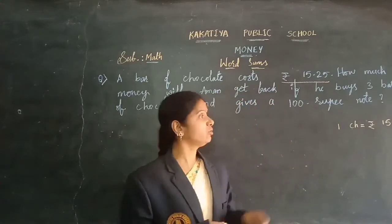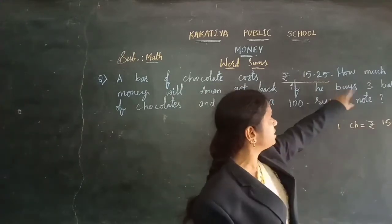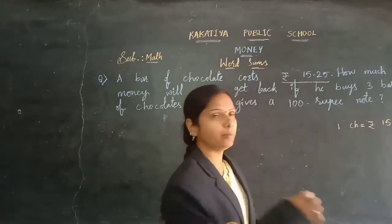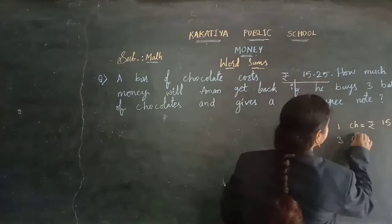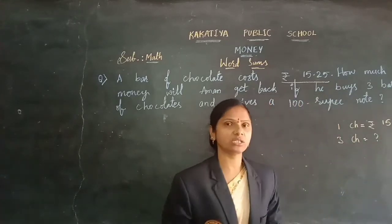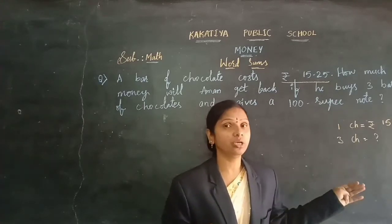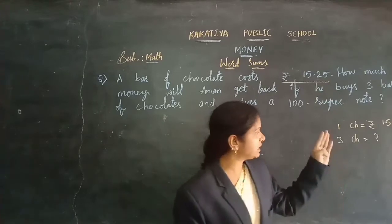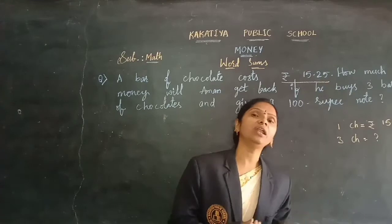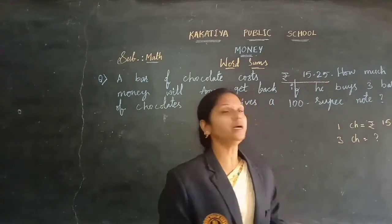First let's find out the 3 chocolates cost. 1 chocolate cost is given. He purchased 3 bars of chocolates now. Let's find the 3 chocolate bar cost. We know 1 and we are finding more — 3 is more chocolates — so we need to do multiplication. First let's find the multiplication, then we will get the 3 chocolates bar cost. Later we will find how much he gets back if he gives the shopkeeper a 100 rupee note.